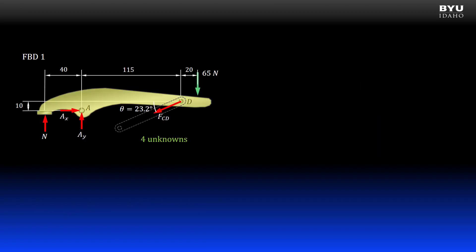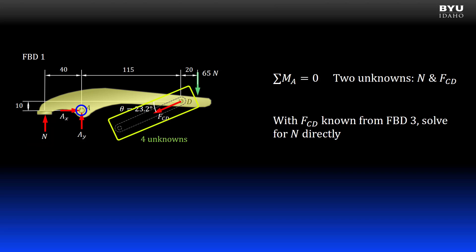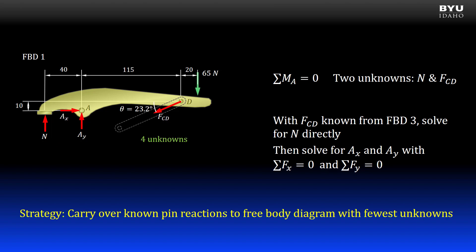Next I move to free body diagram one. A good reason to go here next is that it has the fewest unknowns of the remaining members. If I started here and tried to take moments about point A I would have two unknowns in my equation — the normal force and force CD. However, since I know force CD from analyzing free body diagram three, summing moments at A will give me the normal force directly. Then I could get AX and AY by summing forces to zero. So a good strategy is to carry over known pin reactions to the next free body diagram with the fewest unknowns.